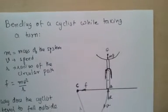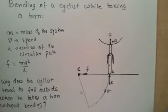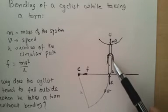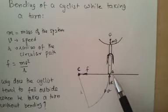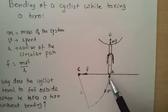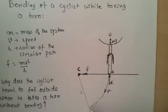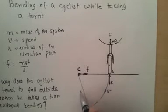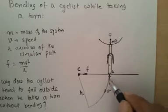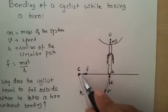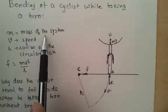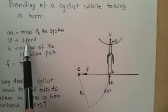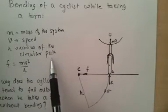Let us look at a diagram of a bicycle. We have a bicycle which is on this particular road, and we are thinking that this bicycle is taking a turn along this road along a particular curve which has got radius r. So it is taking a turn along a circular path which has got radius r. Mass of the system is m — that means the mass of the cycle as well as the cyclist. V is the speed with which the cycle is moving and r is the radius of the circular path.